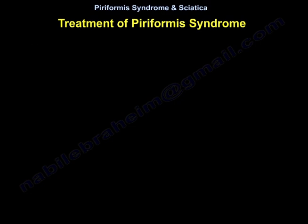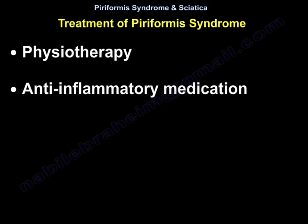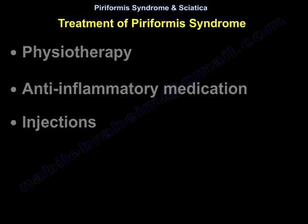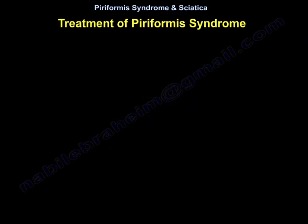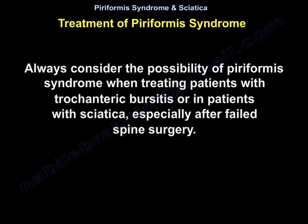Treatment of piriformis syndrome includes physiotherapy, anti-inflammatory medications, and injections. Surgery is the last resort, after you exclude all other causes of spine conditions and after the patient has had an immediate positive response from the injection around the piriformis muscle. The surgery is release of the piriformis muscle and decompression of the sciatic nerve. Always consider the possibility of piriformis syndrome when treating patients with trochanteric bursitis or in patients with sciatica, especially after failed spine surgery.